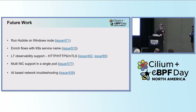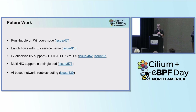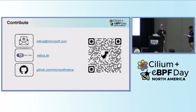We also want to accomplish L7 observability support and multi-NIC support in a single pod inside the Retina project. We also have a Skunk Works project for AI-based network troubleshooting that we've demoed for a hackathon. Here's the GitHub, email, and website — the QR code links to the website as well. Thank you.